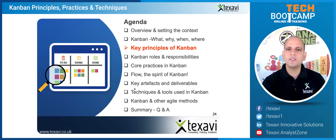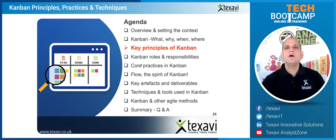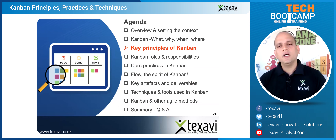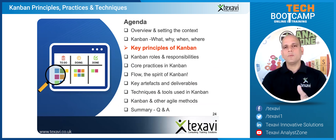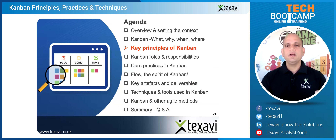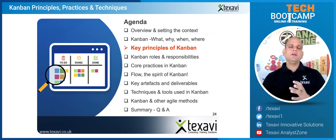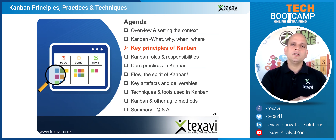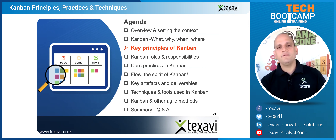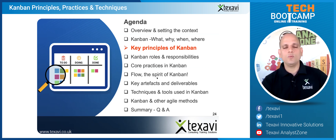Let's move on to the key principles of Kanban. We've understood why Kanban is helpful, what it is in the context of software development, how it transitioned from Toyota manufacturing through to software development, and how it beautifully sits within all other agile contexts — including product development, product improvement, and process re-engineering. It's a very nice concept and framework to be used in that way as well.